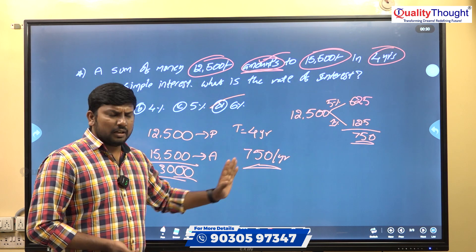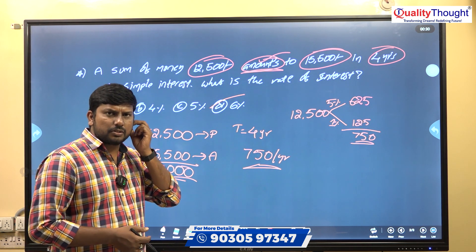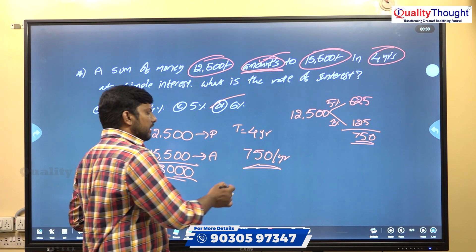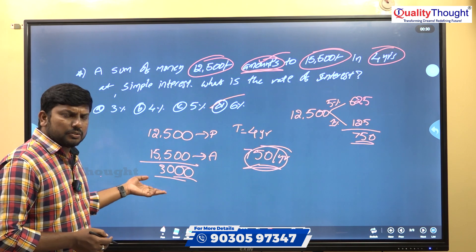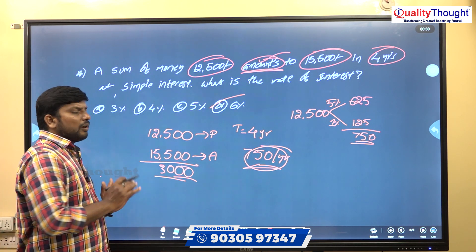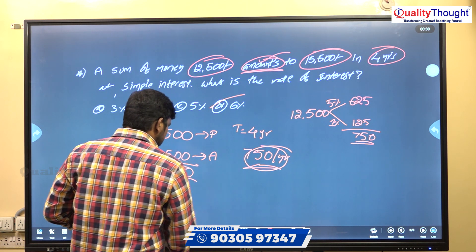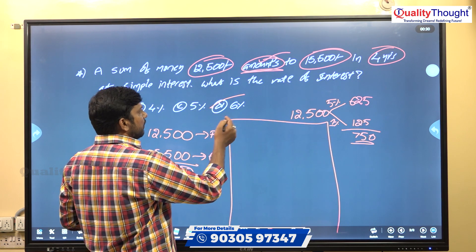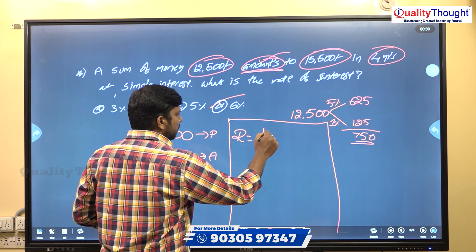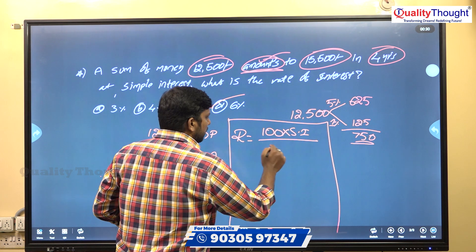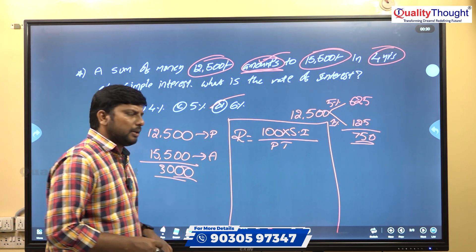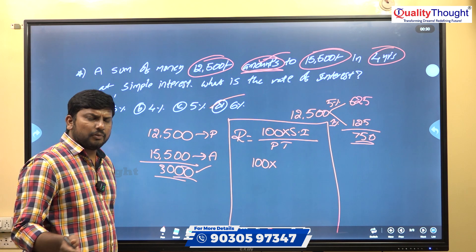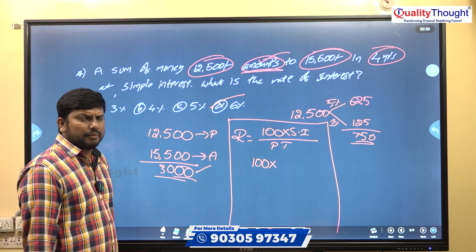So this is how we can simply calculate without a formula. Now, let's verify using the formula: Rate of Interest = 100 × Simple Interest ÷ (P × T). That is 100 × 3,000 divided by 12,500 into 4.